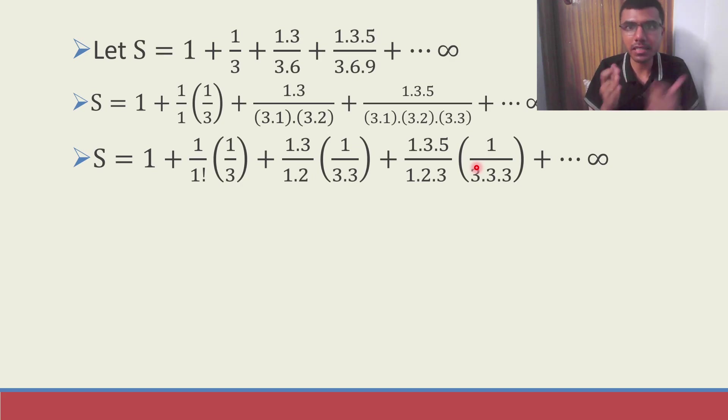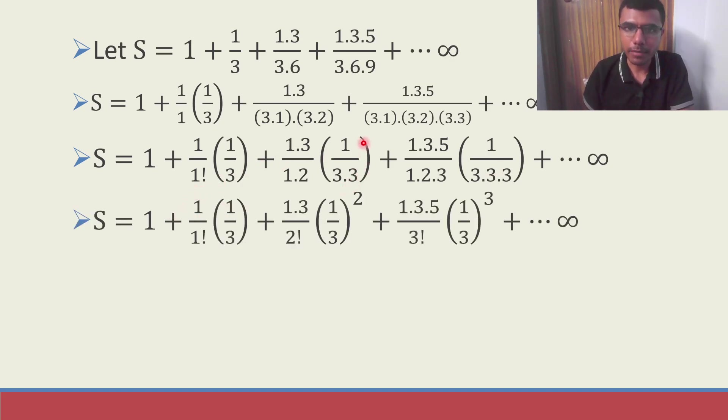Next, because I want increasing powers of a number. Here, basically it is 1 by 3. This would be 1 by 3 whole square. This will be 1 by 3 whole cube. So I guess you are able to understand how I'm trying to construct a pattern here. 1 by 3 into 3 is nothing but 1 by 3 whole square and 1 by 3 into 3 into 3 is nothing but 1 by 3 whole cube. So likewise, it just goes.